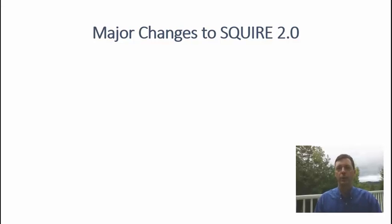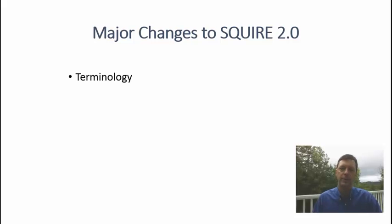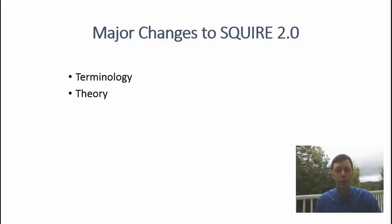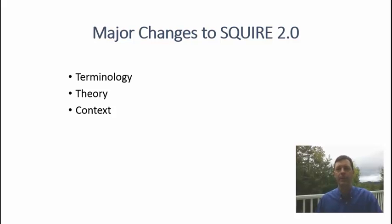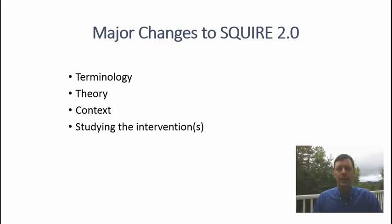So what are the major changes to SQUIRE 2.0? There are four. The first is terminology — we found the terminology in 1.0 wasn't as clear as it could be. The second is theory: the use of theory in improvement work, which SQUIRE 2.0 encourages more explicitly. Third is context, which now has its own section rather than being woven throughout. Fourth is the section on studying the intervention, which is one of the most challenging aspects.